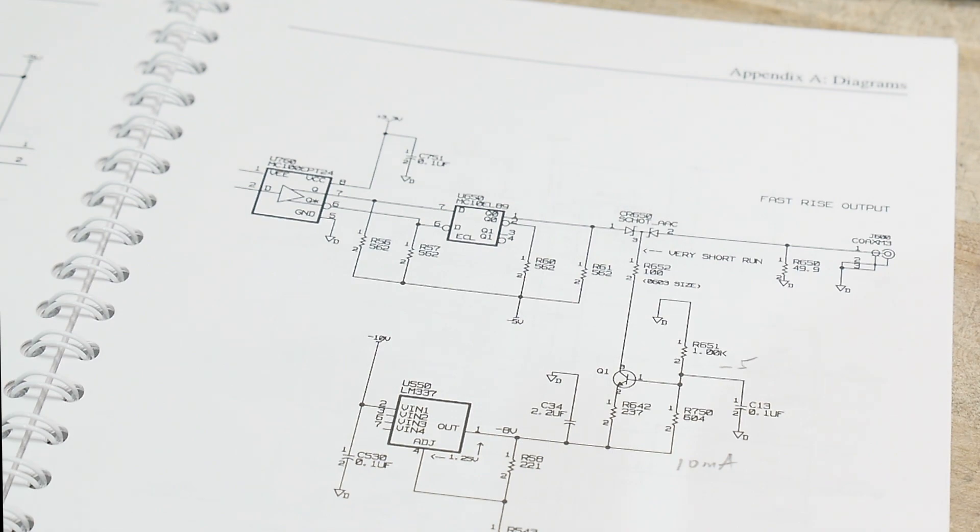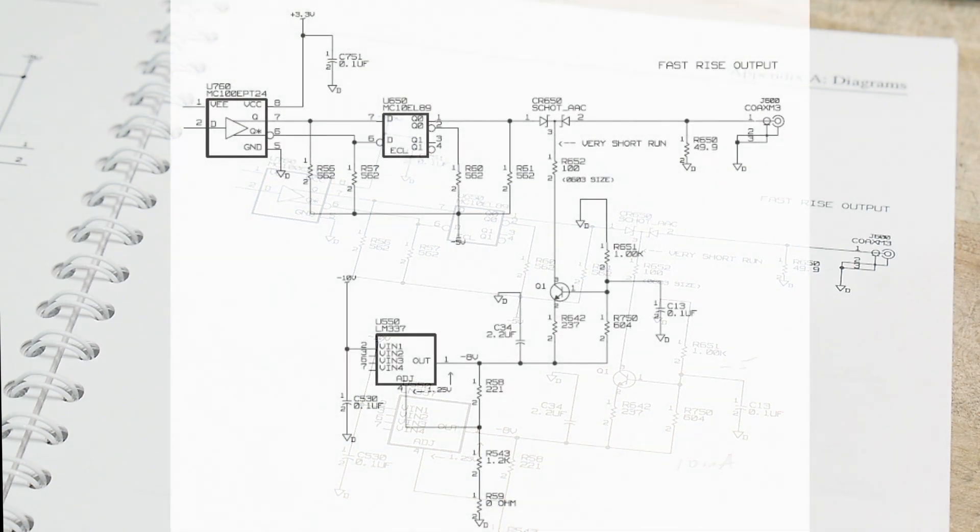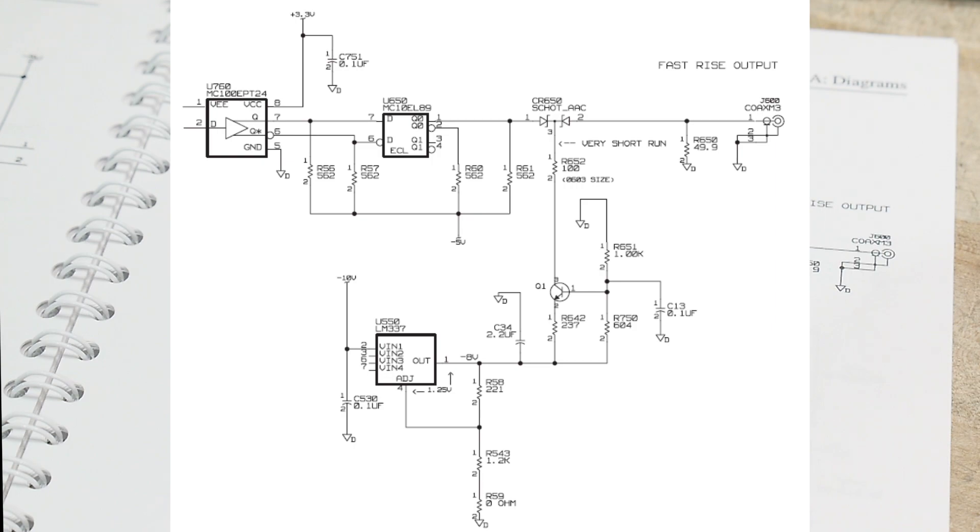At the bottom of the schematic you'll see a 337 voltage regulator that's generating minus 8 volts. We have minus 8 volts and then we have that transistor which is acting as a current source. If you do the voltage math on that part, you'll figure out that this is a 10 milliamp current drain, so we're pulling down with 10 milliamps.